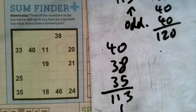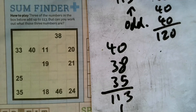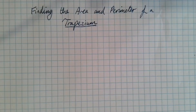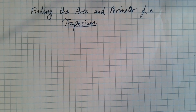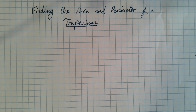Sometimes it's not just about blindly trying everything — it's about thinking about what you've got in the first place. Right, so we're looking at finding the area and perimeter of a trapezium today. A trapezium is a four-sided shape with just one pair of parallel lines.